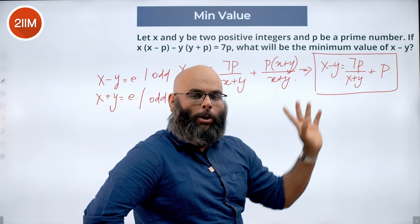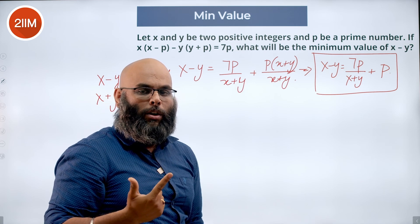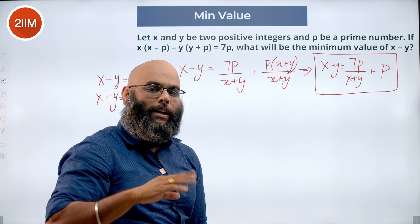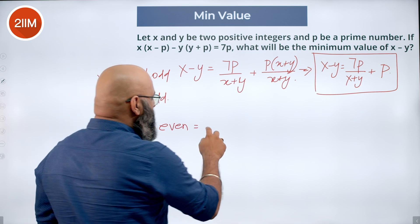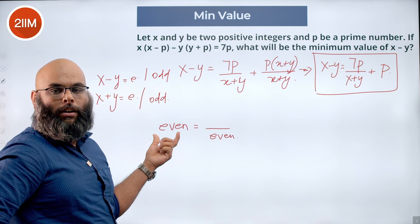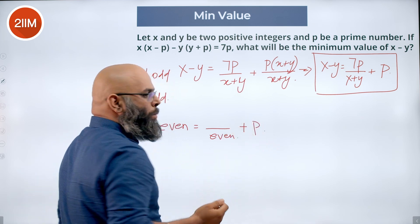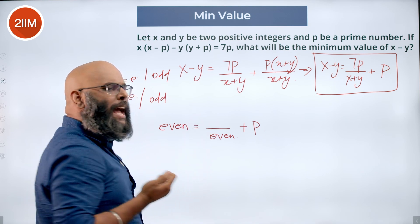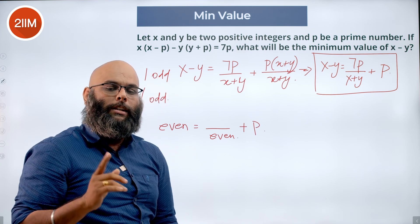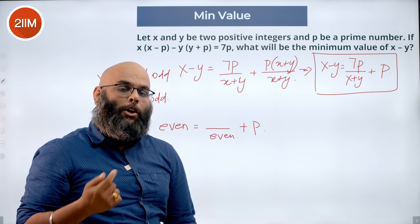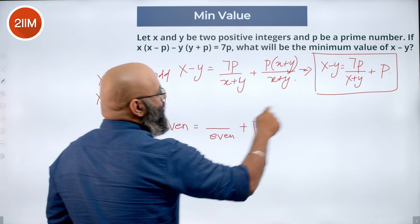I'm trying to figure out what could possibly happen here. There are two cases: either x minus y is even or x minus y is odd. Let's say x minus y is even. Then an even number equals 7p divided by an even number plus p. Since the result must be an integer, 7p must be divisible by an even number, meaning 7p must be even. The only even prime is 2, so p equals 2.